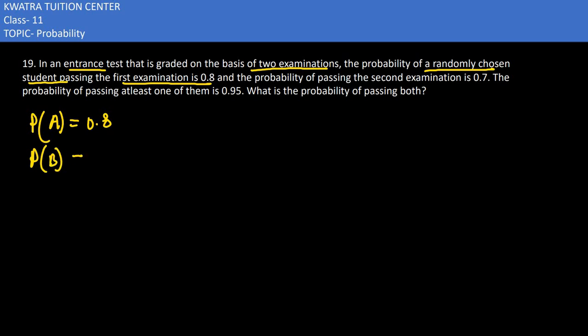What is probability of B? It is 0.7. Then you have the probability of passing at least one of them. One of them means that either A passed or B passed.